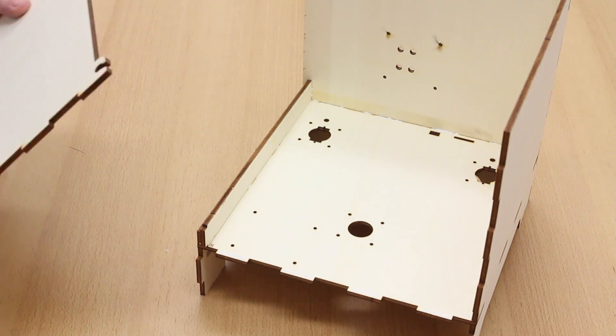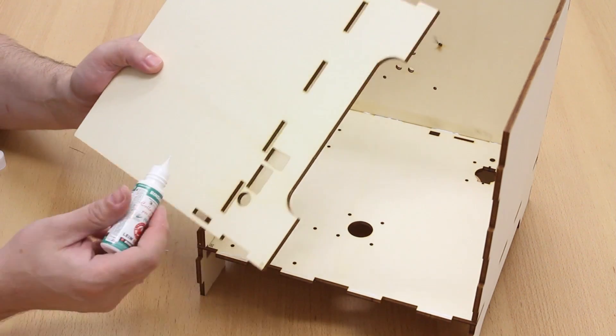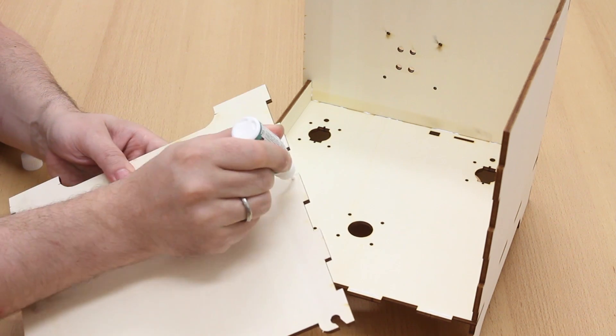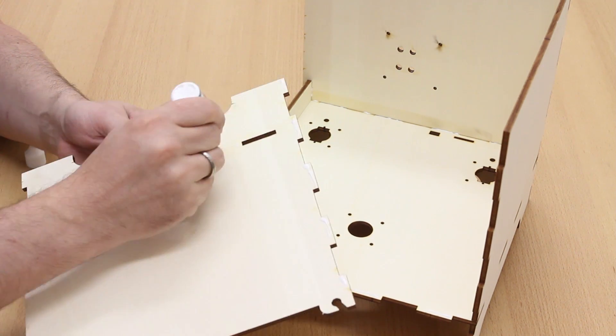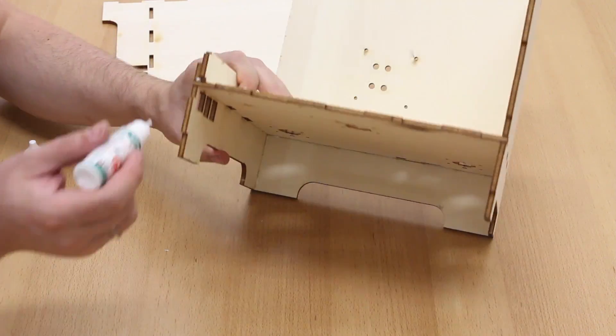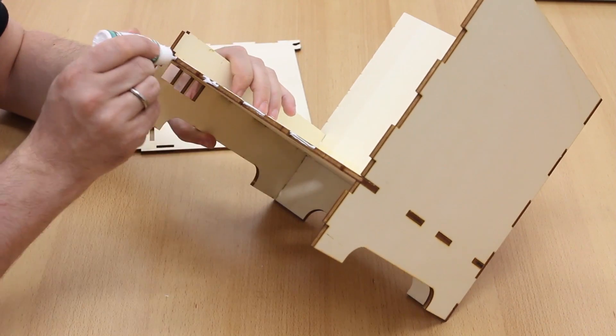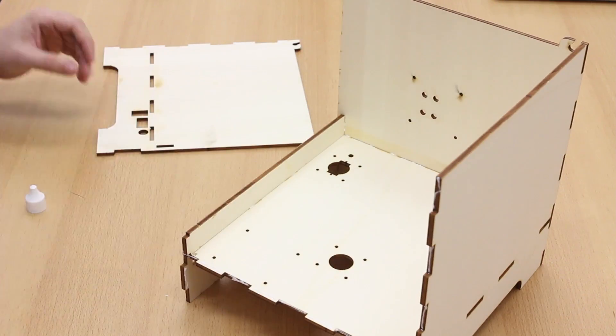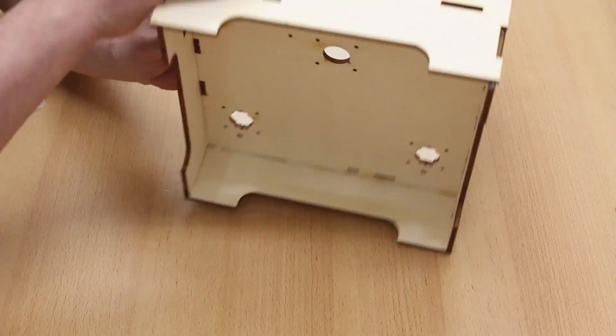So the last part is the right part of the box. Apply glue to it, to the inner side of it. And of course some glue to the base plate and to the back.